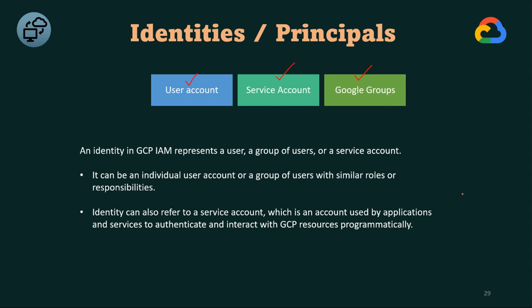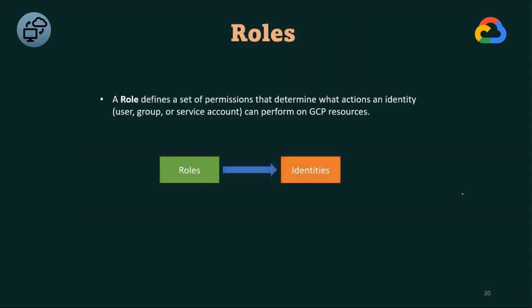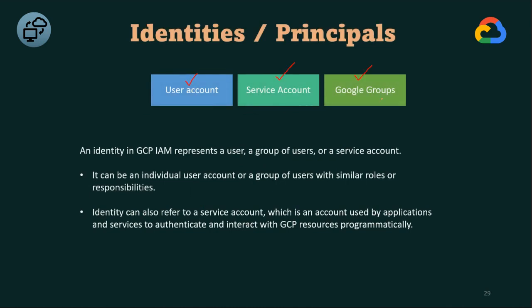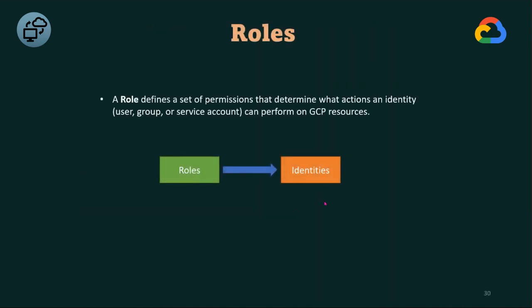So the identities and principals include user accounts, groups of users, and service accounts. Now, how do you provide access to an identity? You provide access through roles. A role is a set of permissions — for example, a role contains permission 1, permission 2, permission 3. You assign roles to identities such as user accounts, service accounts, and Google groups.